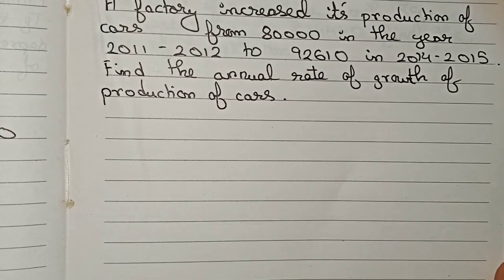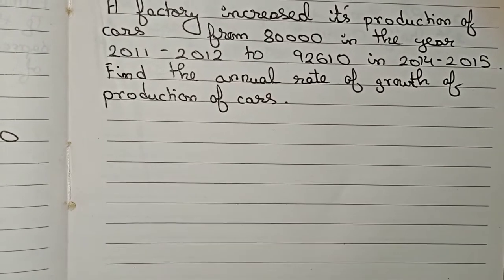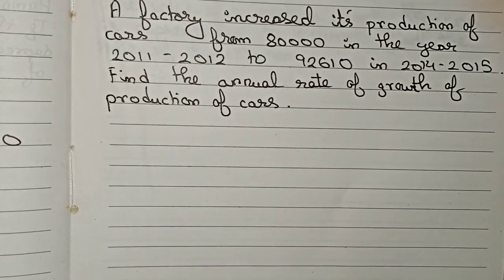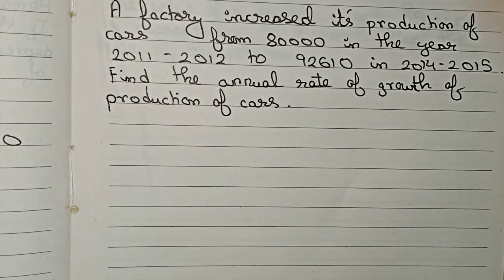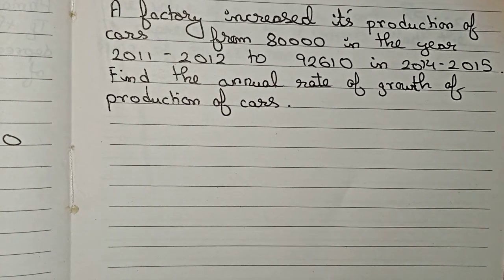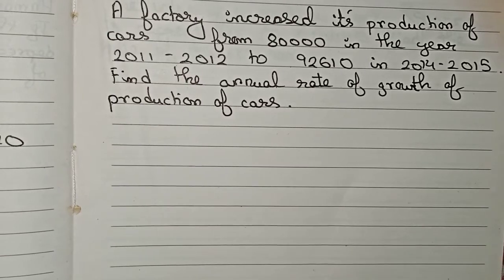Hello guys, welcome to this video. In this video, our question is: A factory increased its production of cars from 80,000 in the year 2011-2012 to 92,610 in 2014-2015. Find the annual rate of growth of production of cars.